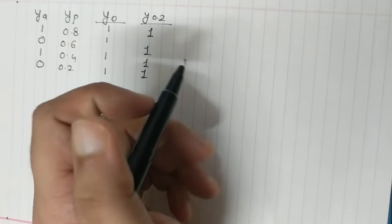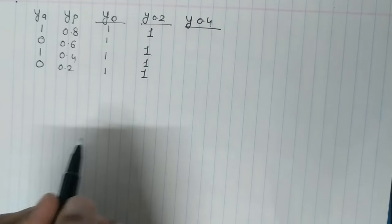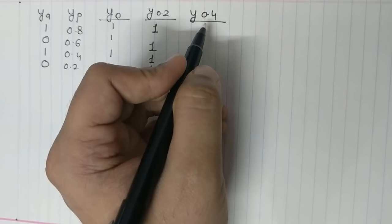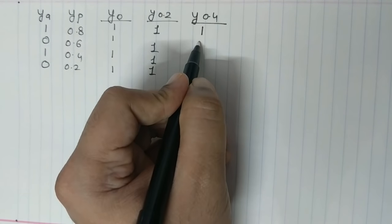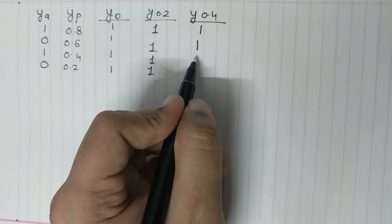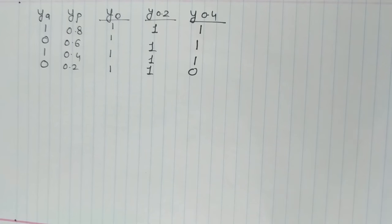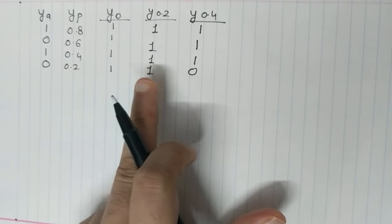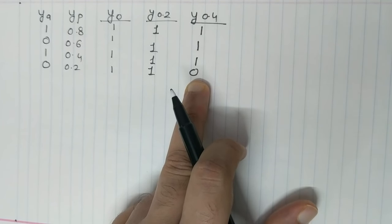So far so good. Now let's go to 0.4. At Y equal to 0.4, now the first sample would be classified as 1, second sample would be classified as 1, third will be classified as 1, but the fourth one now would be classified as 0 because 0.2 is less than 0.4. So you will be classifying that sample as 0.